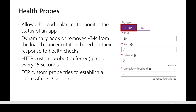There are different configurations for health probes. One is the unhealthy threshold — how many consecutive failed health checks are allowed before the backend is taken out of rotation. In the example, two unhealthy thresholds means if the health check fails two consecutive times, traffic will stop being sent to that backend. The interval is set to five, meaning the load balancer probes every five seconds.